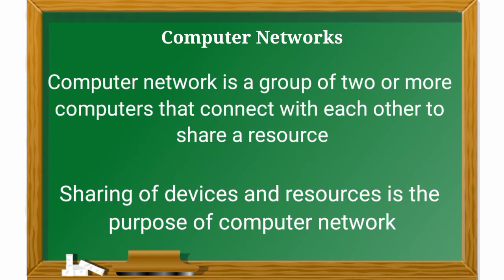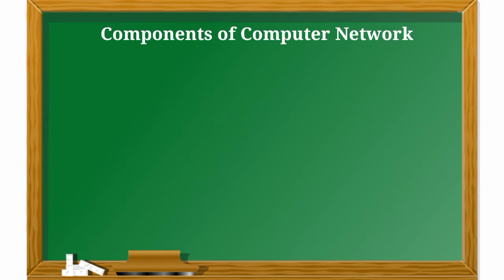What do you mean by computer network? A computer network is a group of two or more computers that are connected with each other to share a resource. The connection of computers to share a particular resource is called a computer network. A network is any arrangement where a sender transmits a message to a receiver over a channel consisting of some type of medium.